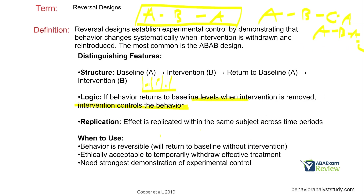When might we use reversal? When behavior is reversible — when we can actually reverse behavior. Be careful with academic skills, for example. If I teach someone 2 plus 2, it's going to be hard to reverse that learning. Is it ethically acceptable to withdraw treatment? If there's some severe hair pulling going on, is it okay to withdraw treatment knowing the hair pulling might come back? And if you need the strongest demonstration of experimental control, reversal design is typically best.